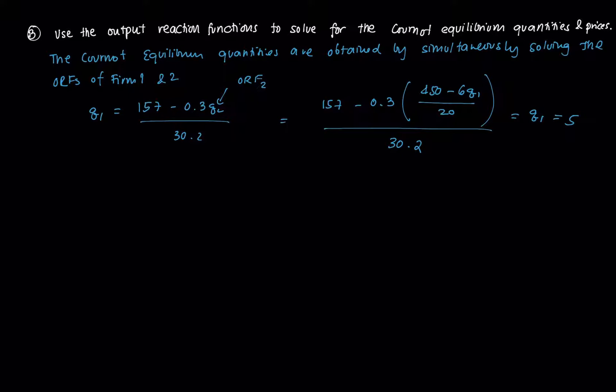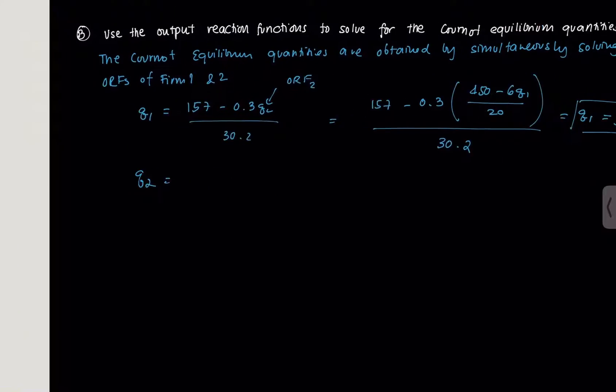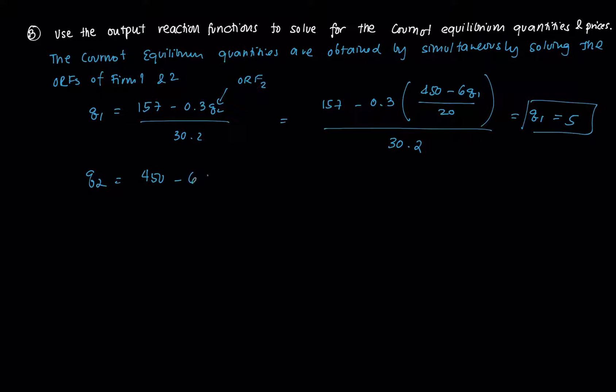For Q2, we go to the ORF again. That's (450 minus 6Q1) all over 20. Then plug in our Q1, which equals 5. That's (450 minus 6 times 5) over 20. You get Q2 equals 21. That's the Cournot quantity for firm 2 and for firm 1.